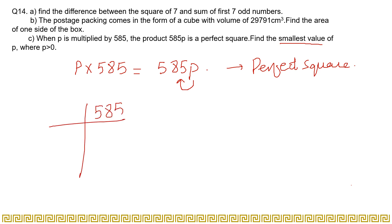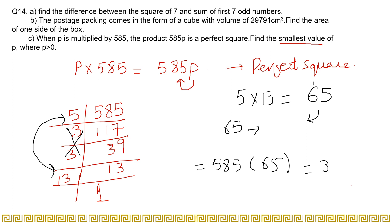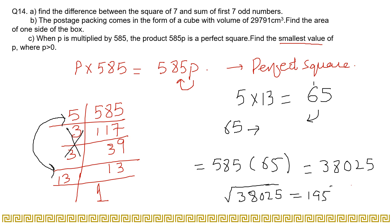For this you need to find the prime factorization of 585. The prime factorization of 585 gives: 585 = 3² × 5 × 13. For a perfect square, all prime factors must appear in pairs. Here 5 and 13 are unpaired, so p = 5 × 13 = 65. You can verify: 585 × 65 = 38,025, and the square root of 38,025 is 195, since 195 × 195 = 38,025. So p = 65 gives you a perfect square.